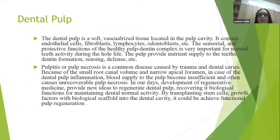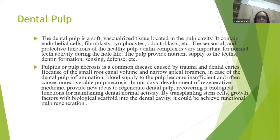The dental pulp is a soft vascularized tissue located in the pulp cavity. It consists of endothelial cells, fibroblasts, lymphocytes, and odontoblasts. The sensorial protecting function of the healthy pulp-dentine complex is very important for tooth activity during the whole life. The pulp provides nutrient supply to the teeth, dentine formation, sensing, and defense.